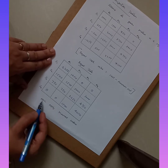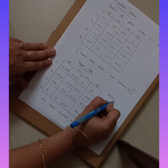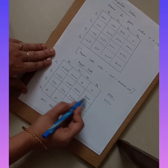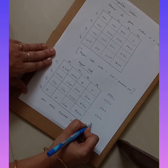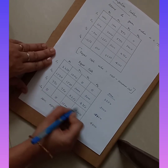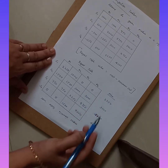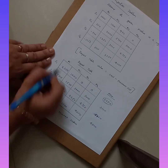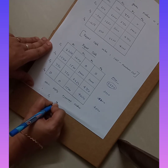Now apply the minimax criterion. Find the maximum value for each row: S1 has maximum 2250; S2 has maximum 3000; S3 has maximum 4000; S4 has maximum 4750. Out of these — 2250, 3000, 4000, 4750 — the minimum value is 2250, which corresponds to S1. Therefore, in this minimization problem, according to the minimax regret criterion, S1 is the best alternative.